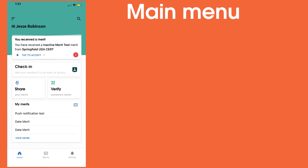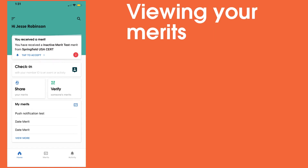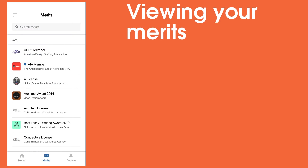Now I'll walk you through some things you can use the app for. If you've been sent any new Merits that are awaiting for you to review them, you'll see a notification like this. You can view a list of all the Merits attached to your profile by selecting the Merits button at the bottom of the screen. This will show you a list of all of your Merits.